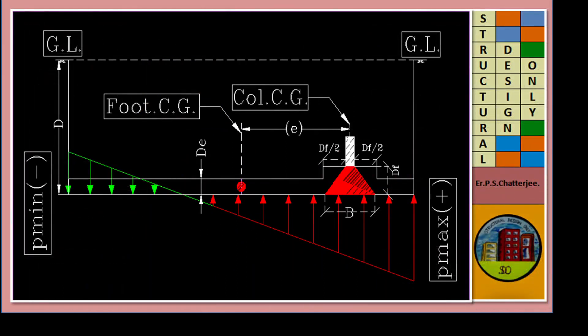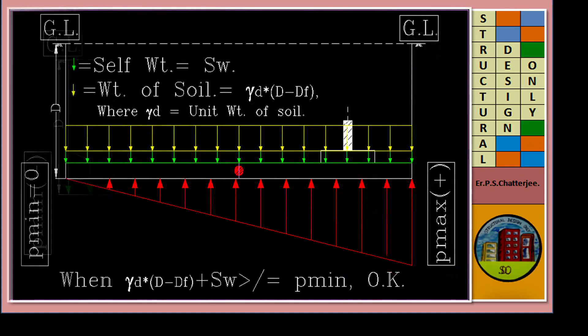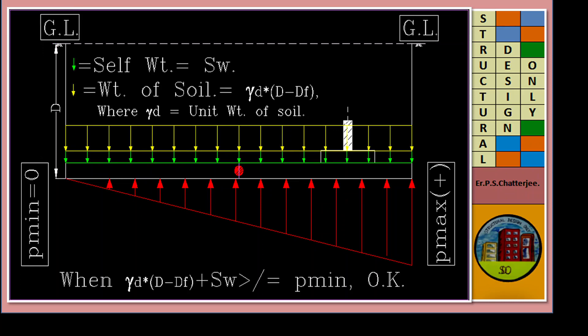For eccentric footing, chance of getting negative reaction is very high. In this situation, to counterbalance this negative reaction, we have to provide some more additional load, that is self-weight of the footing and weight of the soil above footing. Gamma D, that is gamma unit weight of soil, times D minus Df plus Sw greater than or equal to P-min, okay.